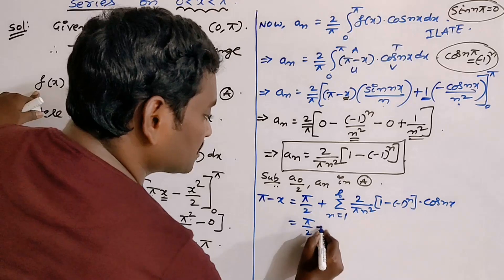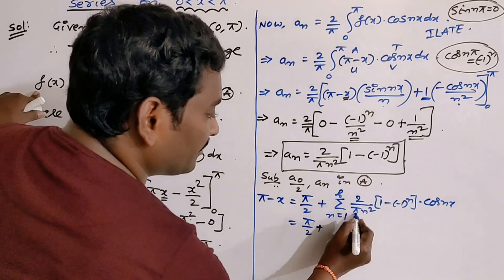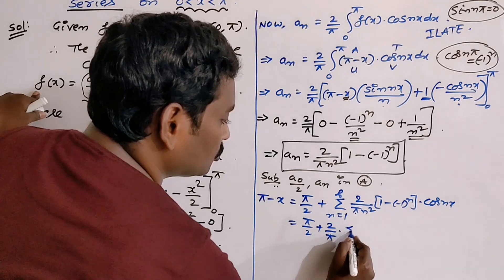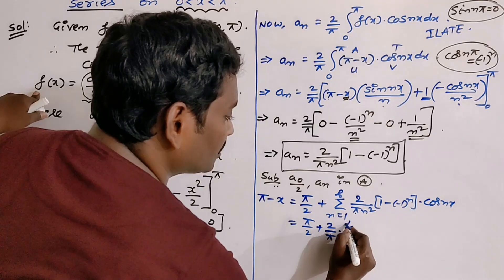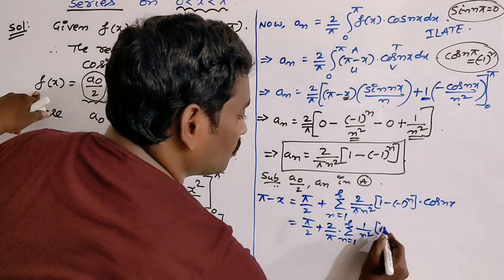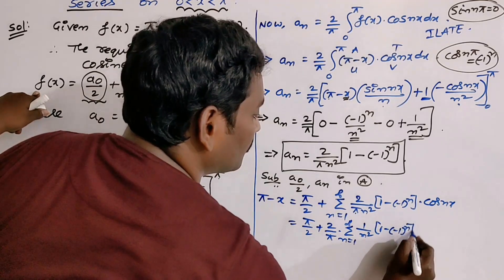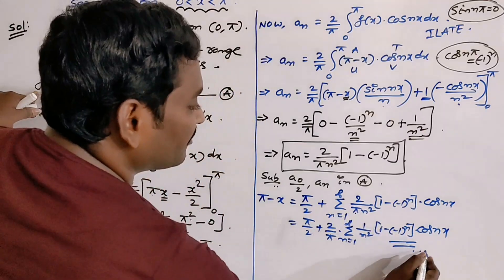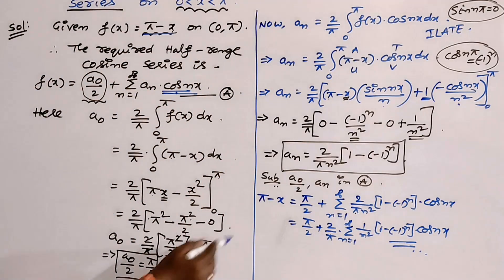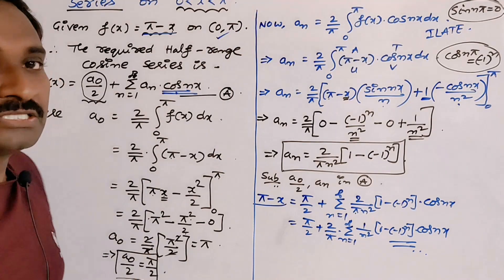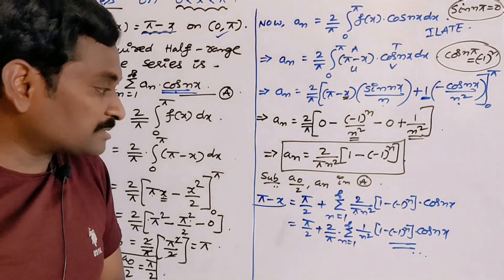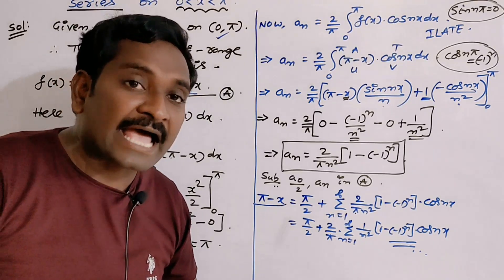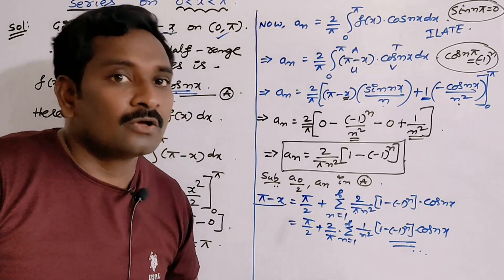So that equals π/2 + ... We are observing that 2/π is the constant term, so write outside of the summation: 2/π Σ(n=1 to ∞) [1/n²][1 - (-1)ⁿ]cos(nx). So this is the required half-range cosine series of given function π - x on the open interval (0, π). Clearly we are observing that this expansion has only cosine terms and it does not have sine terms. That is why this is called cosine series.